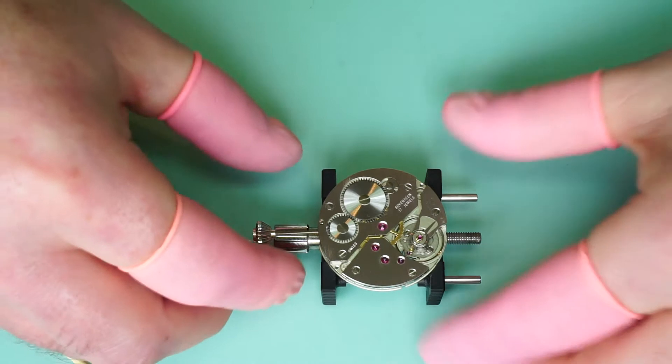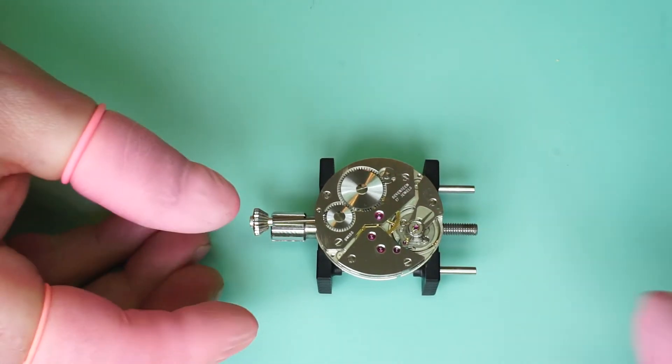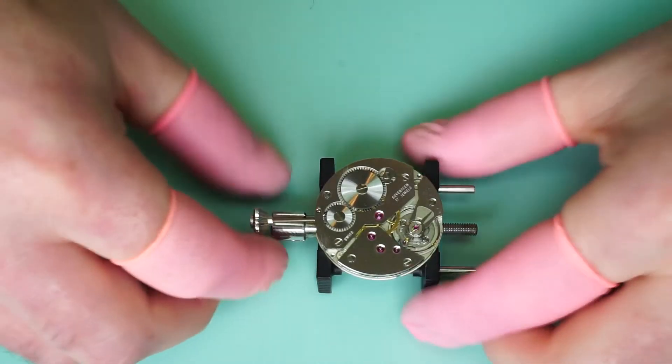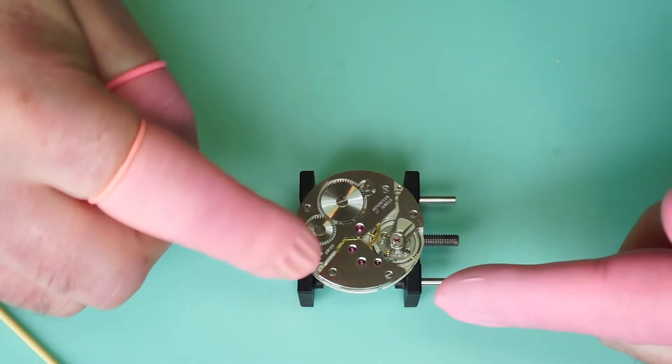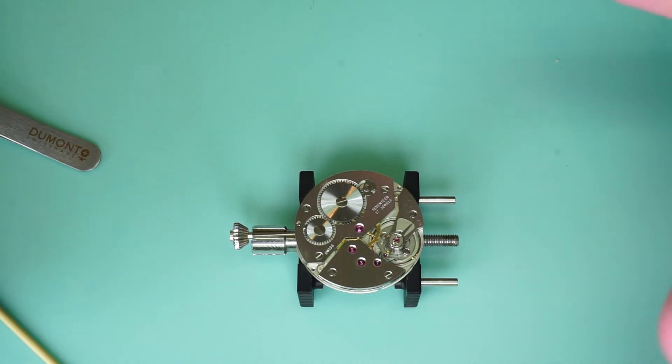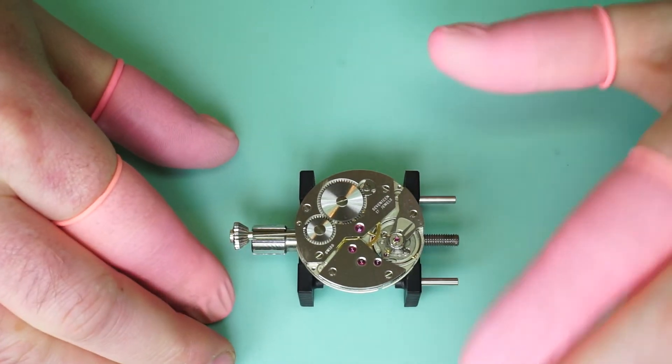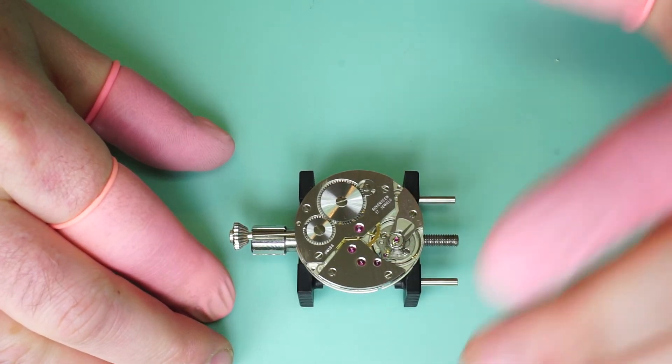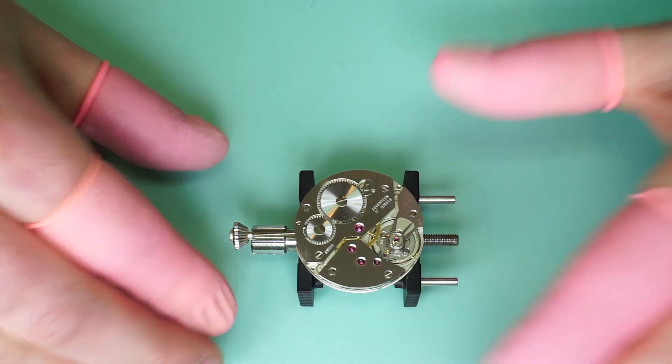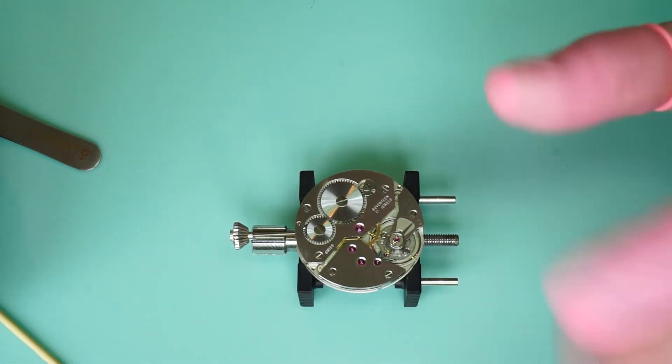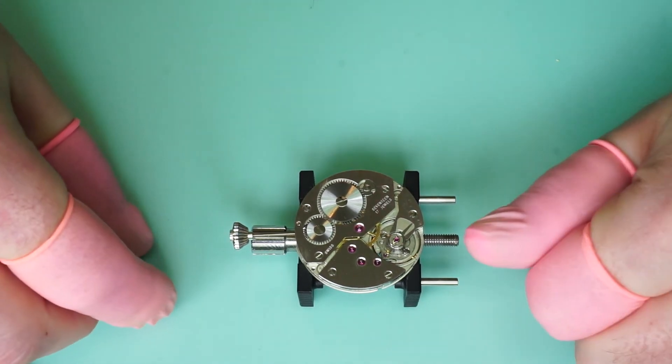And there we pretty much have it, the movement is assembled now and is ticking away. That's only after a few winds so the amplitude is going to be a little low. So the final stage is to lubricate the train wheel jewels and it's quite surprising when you're lubricating watch movements how little lubrication you need. Some people will have a tendency to over lubricate and this can cause other issues.